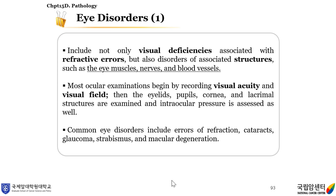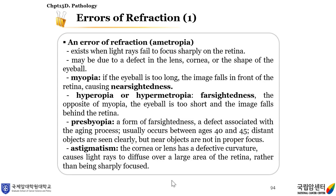Eye disorders include not only visual deficiencies associated with refractive errors, but also disorders associated with structures such as the eye muscles, nerves, and blood vessels. Most ocular examinations begin by recording visual acuity and visual field. Common eye disorders include errors of refraction, cataracts, glaucoma, strabismus, and macular degeneration. An error of refraction, called ametropia, exists when light rays fail to focus sharply on the retina. It may be due to a defect in the lens, cornea, or the shape of the eyeball.